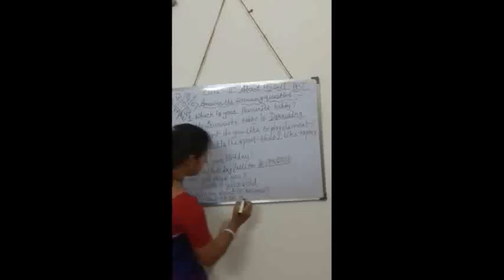I will give one extra question — number 5: What do you want to become? The answer will be: I want to be a doctor, teacher, scientist, and so on. Suppose I will write here: teacher.